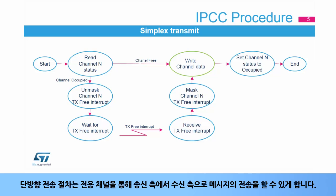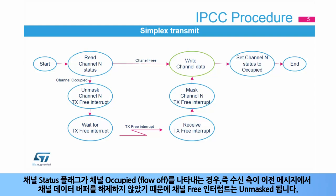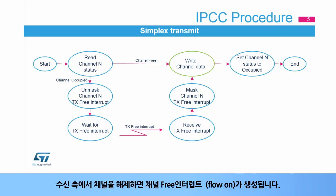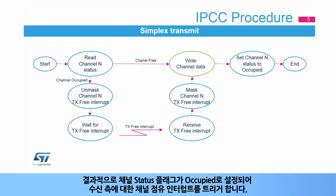The simplex procedure allows the transfer of a message from a sending side to a receiving side via a dedicated channel. To transmit a message, the channel status flag is checked. When the channel status flag indicates channel occupied, or flow-off, due to the receiving side not having freed the channel data buffer from a previous message, the channel-free interrupt is unmasked. Once the channel is freed by the receiving side, a channel-free interrupt, or flow-on, is generated. When the channel-free interrupt is generated, it is masked, and the message can be written in the channel data buffer. Subsequently, the channel status flag is set to occupied, which triggers a channel-occupied interrupt for the receiving side.